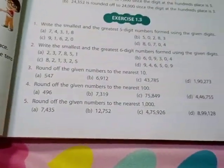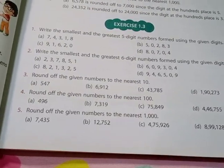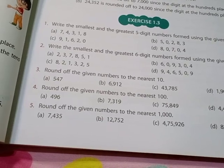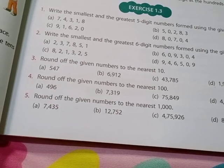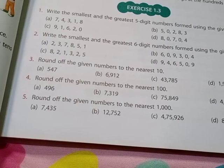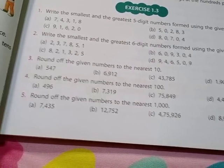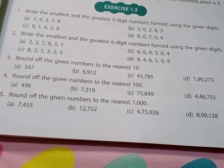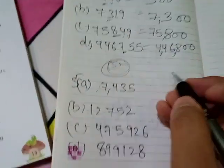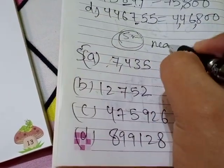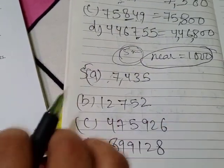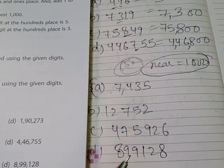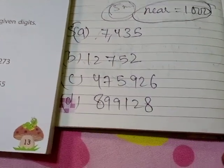We will finish this exercise in this video clip only. Question 5 is to round off to the nearest thousand. The numbers are: A is 7435, B is 12752, C is 47592, and D is 89912. For rounding off to the nearest thousand, we come to the thousands place.